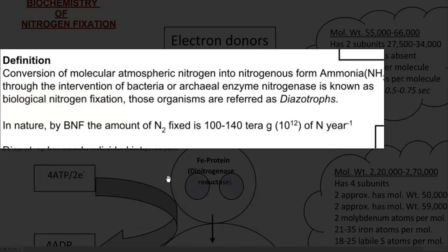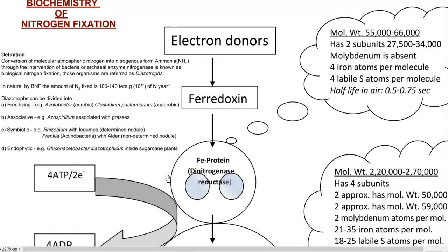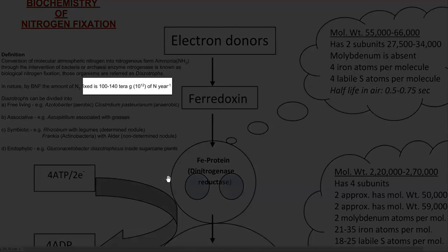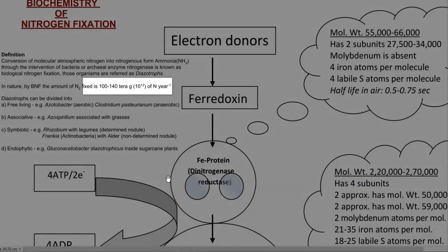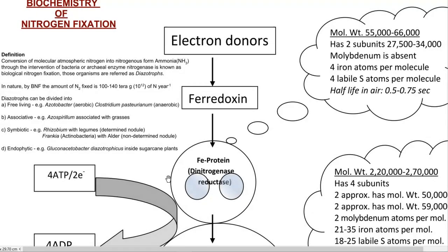These kinds of organisms are called diazotrophic organisms or diazotrophs. The biological nitrogen fixation process accounts for about 100 to 140 teragrams, that is 10 to the power 12 grams, of nitrogen per year. These organisms are broadly divided into four groups: free-living organisms, associative symbiotic organisms, symbiotic organisms and endophytic organisms.